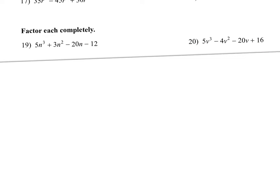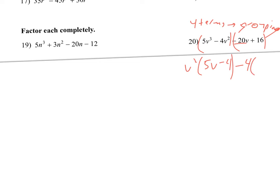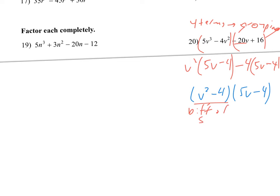Next up, we're factoring with 4 terms — automatically I'm thinking grouping. I'll group the first two together, factoring out v squared, which leaves 5v minus 4. The third term is negative, so I take out a negative number; both divide by 4. Factoring out negative 4 leaves 5v minus 4, since dividing by a negative switches the signs. So I can group this as v squared minus 4 times 5v minus 4. But v squared minus 4 is a difference of perfect squares, so I break that apart one more time to get v minus 2, v plus 2, and 5v minus 4.